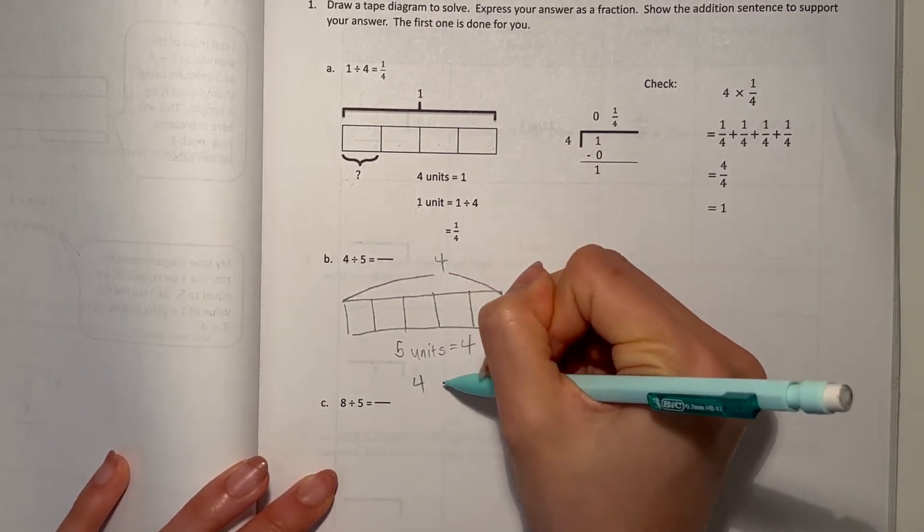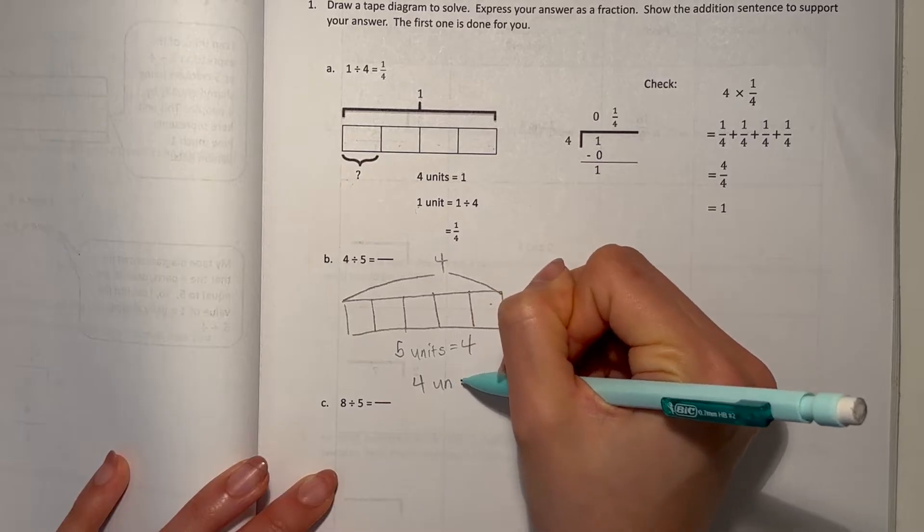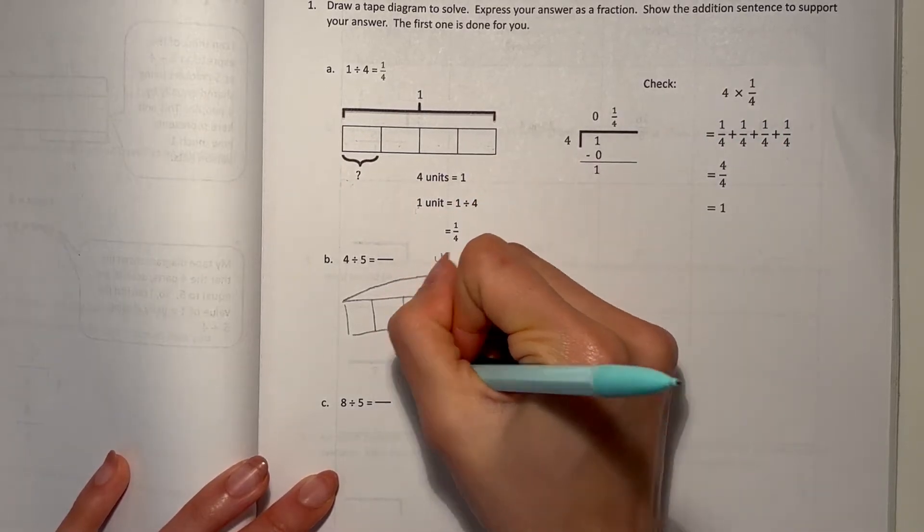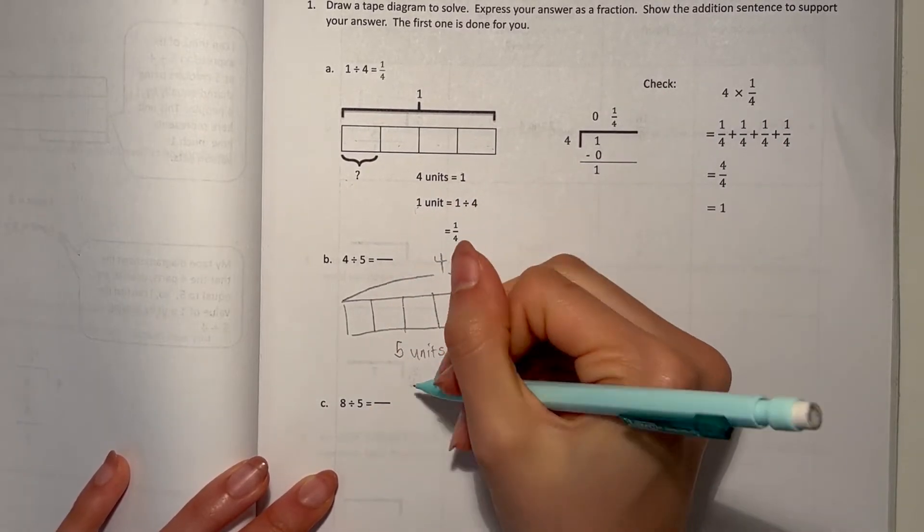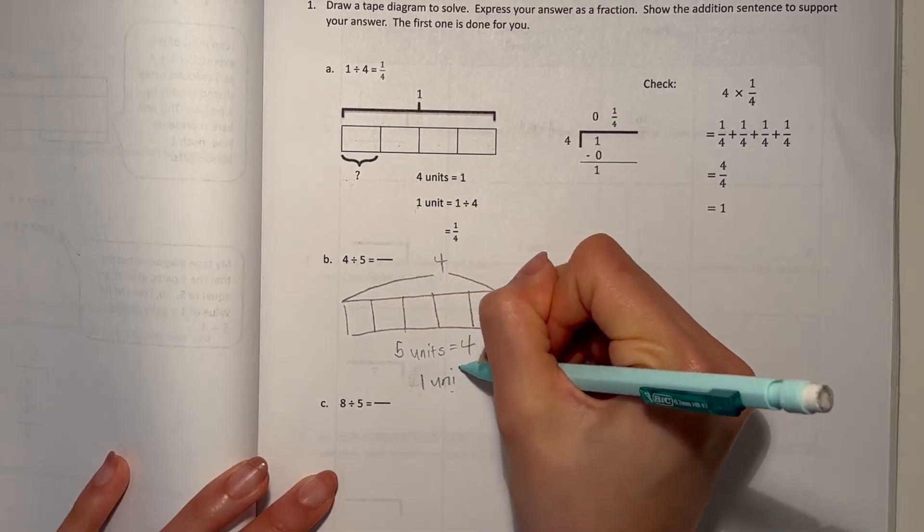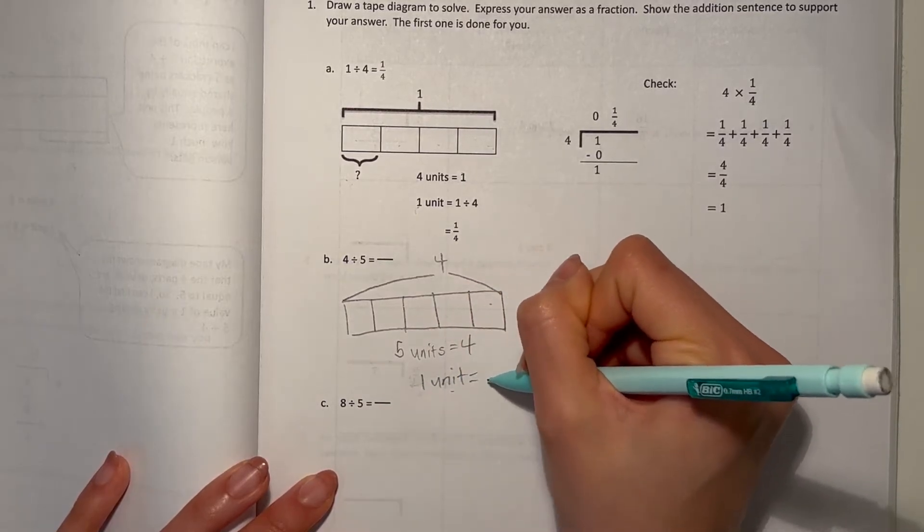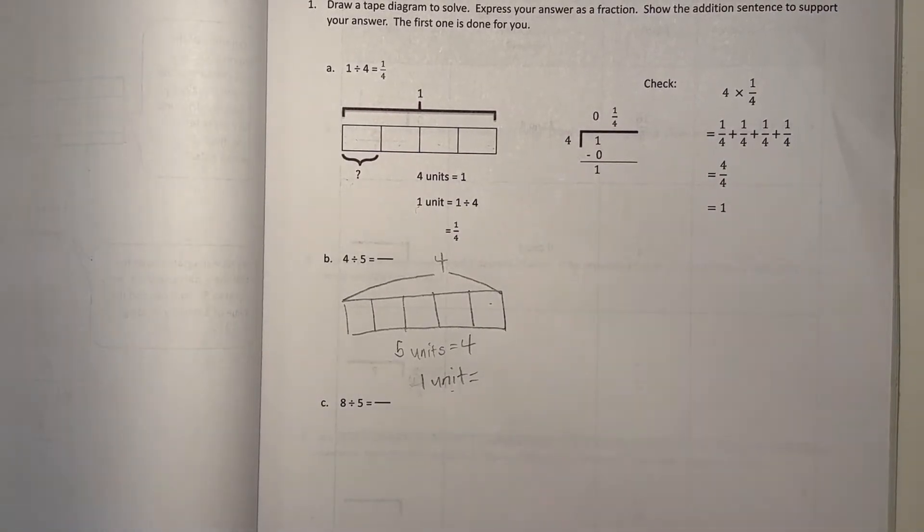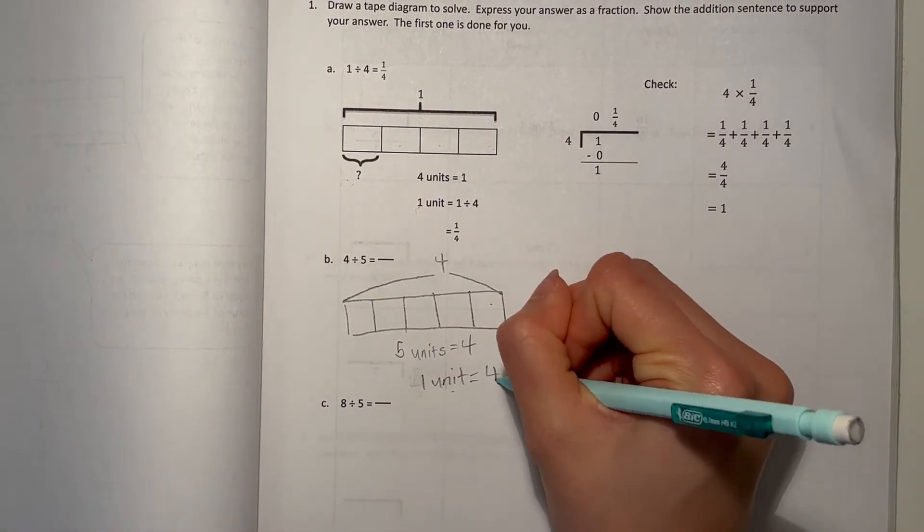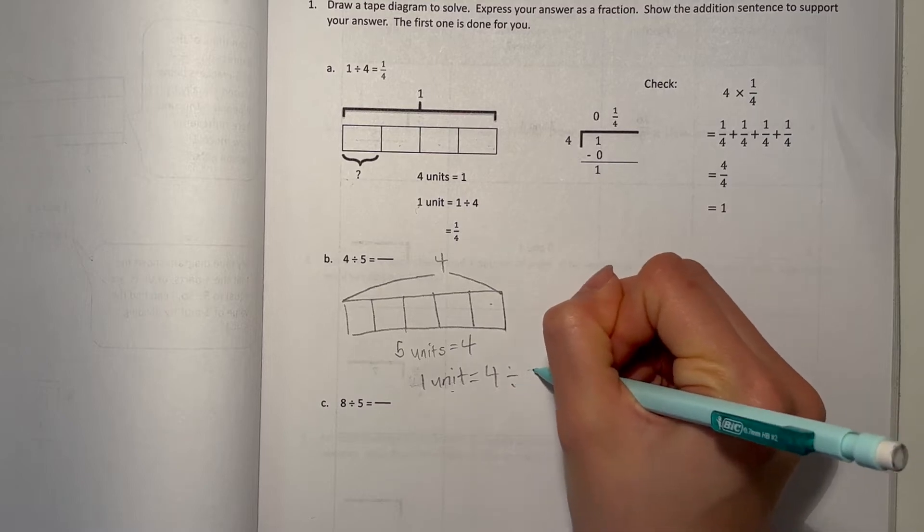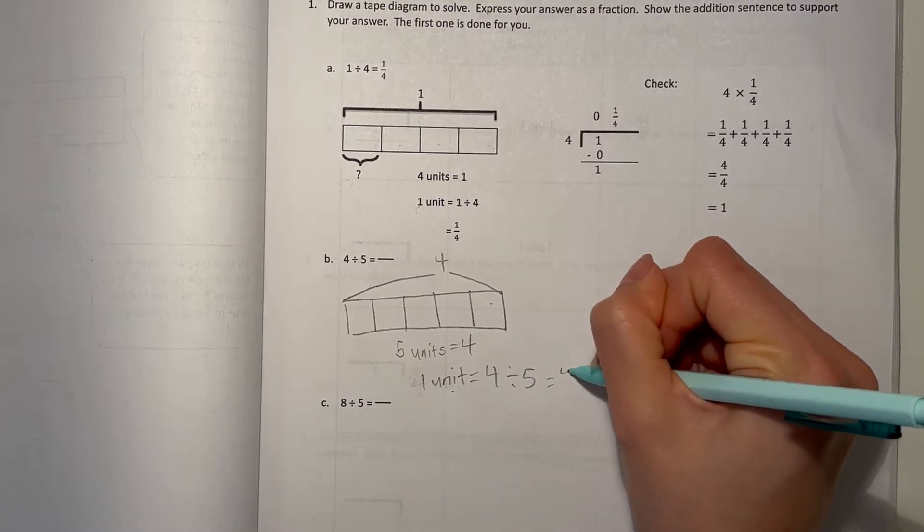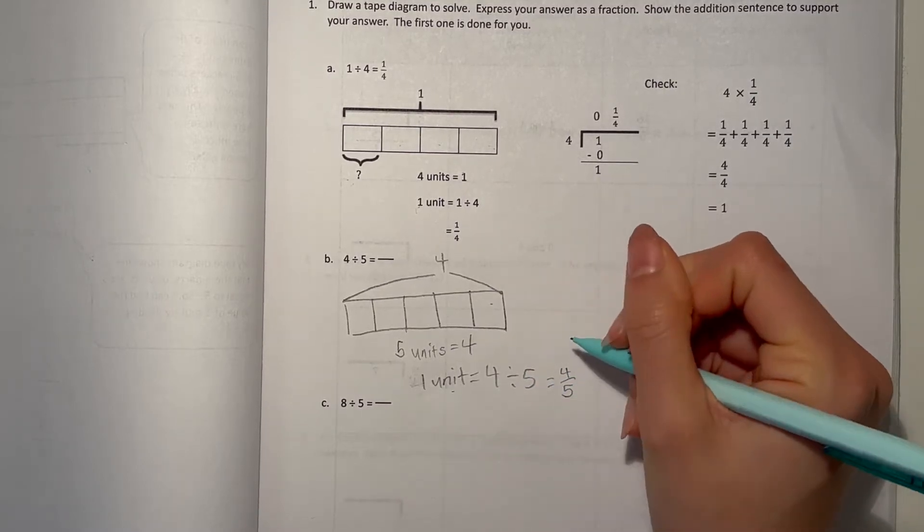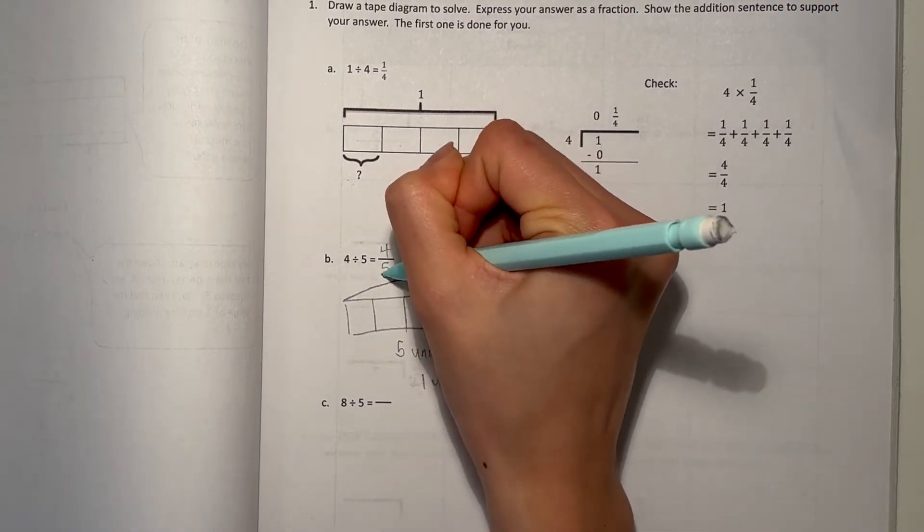So here we have 5 units, and 5 units is equal to 4. One unit here is 1 unit is 4 divided by 5, which is 4 over 5.